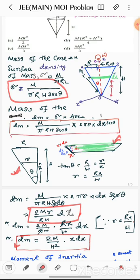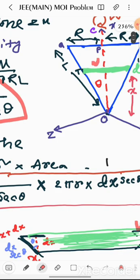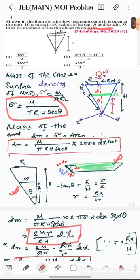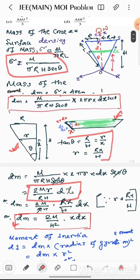From triangle POQ and OTV, we get tan theta equals to capital R by H and small r by x. From this equation we get small r equals to capital R by capital H times x. By putting this value we get dm equals to 2 capital M by capital H square x dx.